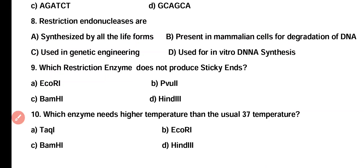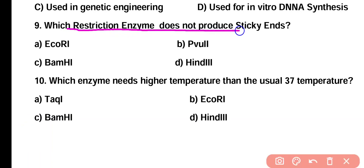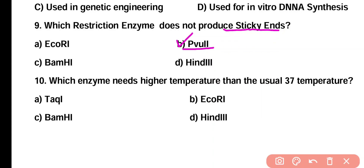Question 9. Which restriction enzyme does not produce sticky ends? Option A: ECO-R1, Option B: PVU2, Option C: BAMH1, Option D: HIN3. Correct answer is Option B. PVU2 is a restriction enzyme which produces blunt ends, so it does not produce sticky ends, while ECO-R1, BAMH1, and HIN3 produce sticky ends on cleavage of DNA.